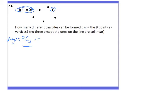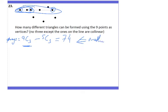I need to find how many three-dot connections can be made from the five dots on the straight line, so I subtract 5C3. That gives 9C3 − 5C3 = 74. That is Method 1. Another method is to consider different cases.